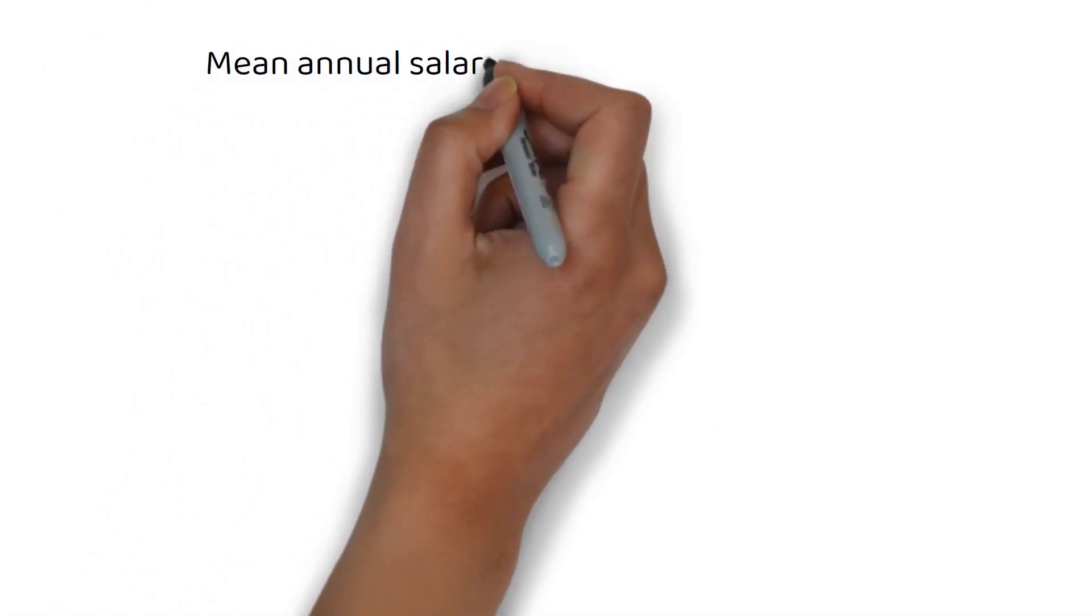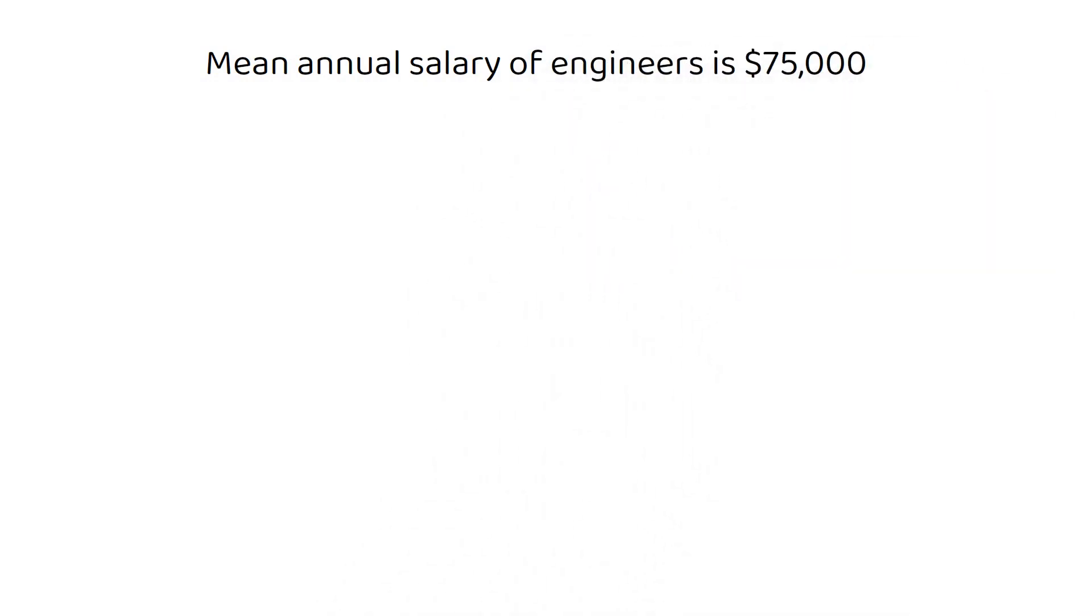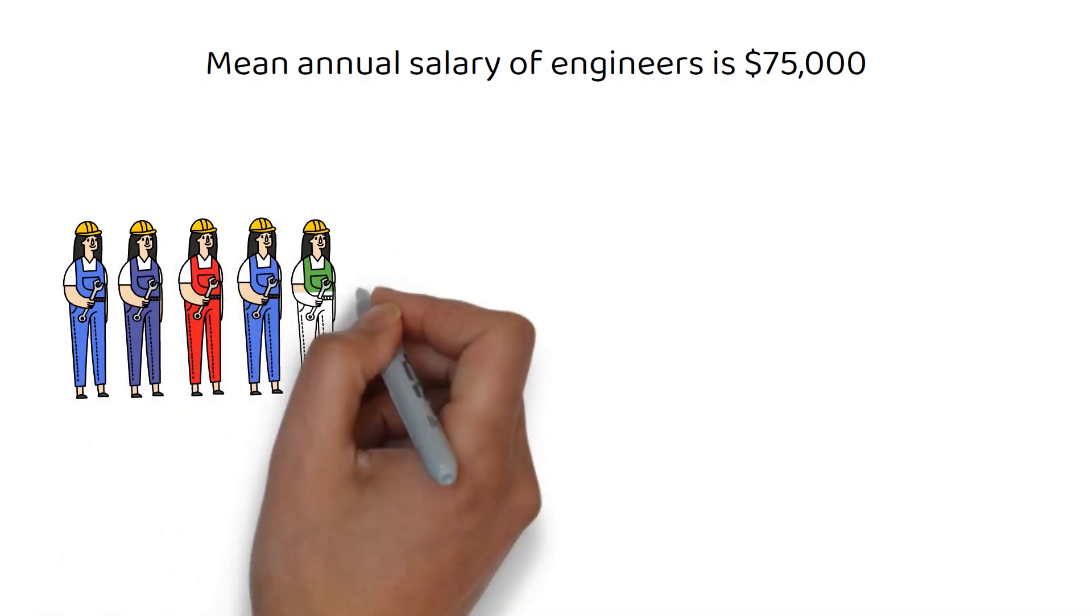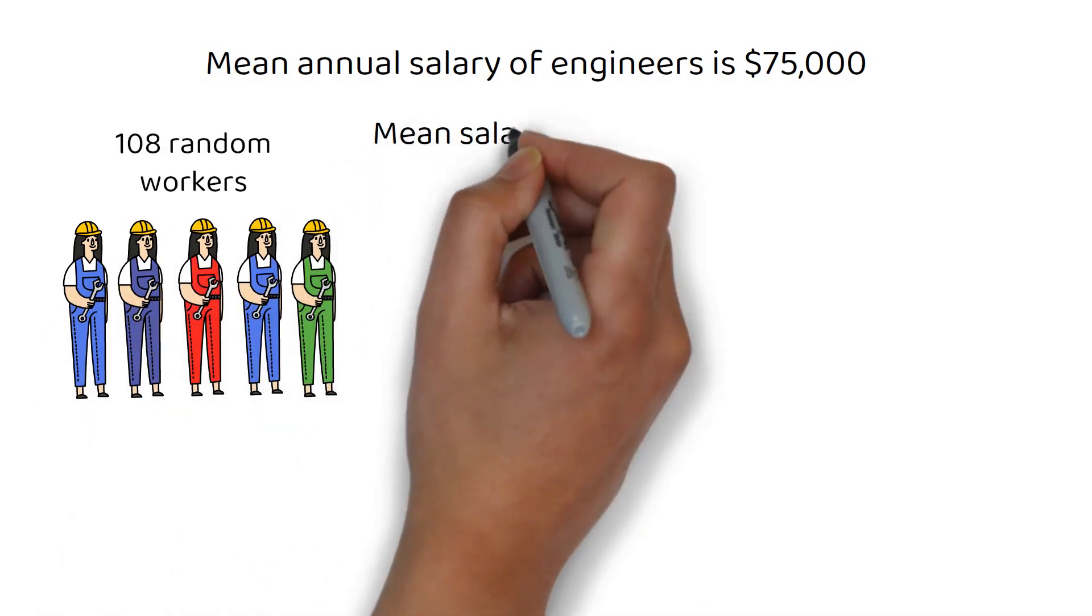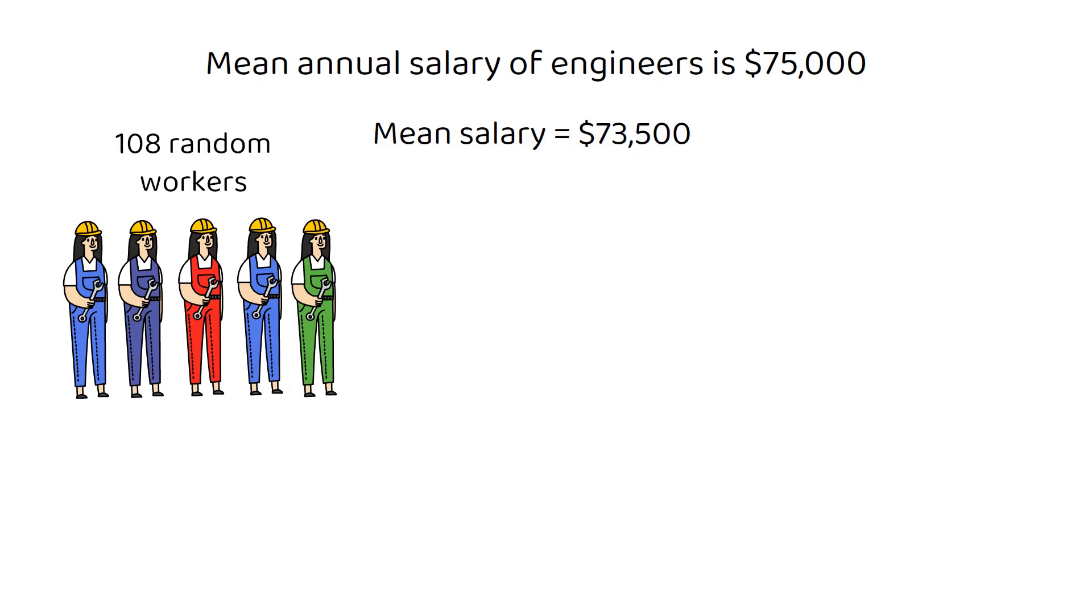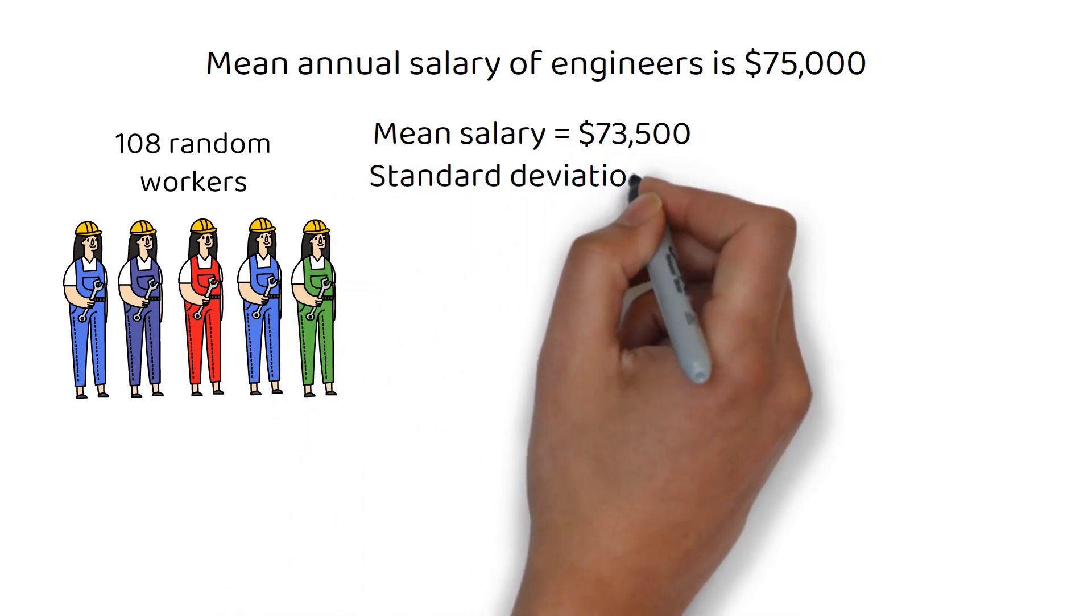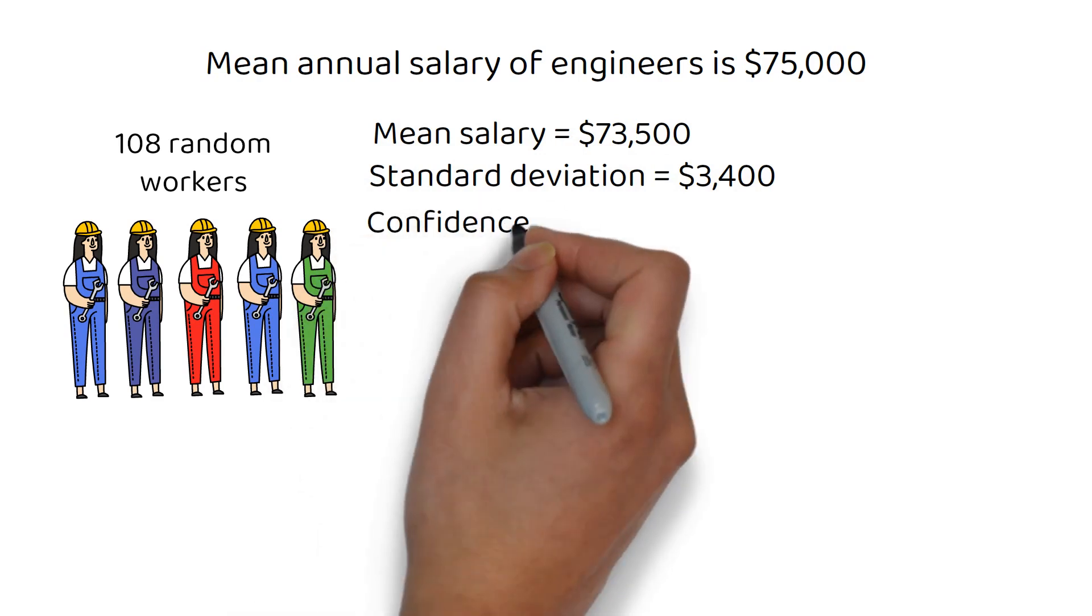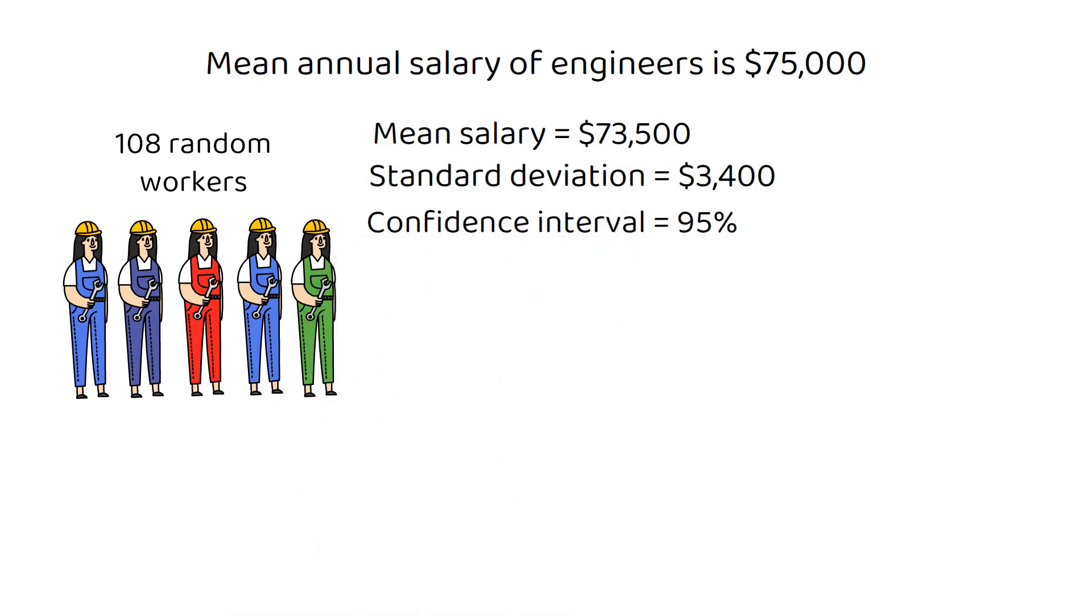An agency states that the mean annual salary of engineers is $75,000. A survey of 108 random workers finds a mean salary of $73,500 and a standard deviation of $3,400. At a confidence interval of 95%, is there enough evidence to reject the agency's claim? Explain.